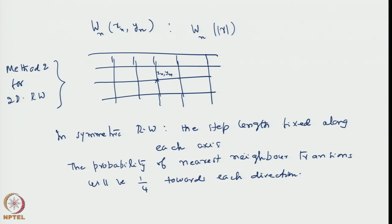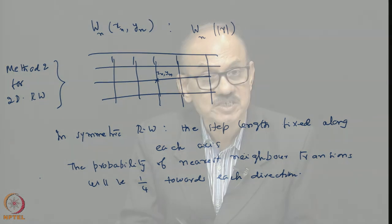Rather than asking for radial constancy, we maintain constancy with respect to each of the Cartesian directions. Thus, with step lengths of unity, in symmetric random walk on a lattice the step length is constant and fixed along each axis. The probability of nearest neighbor transitions is one-fourth in each direction. There are four directions and hence the total probability is one. If we extrapolate to three dimensions, there are three axes with two directions each, giving probability one-sixth for each direction.